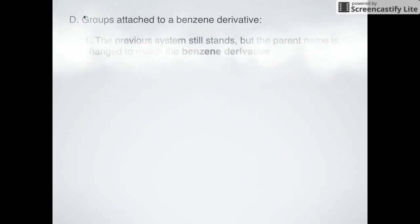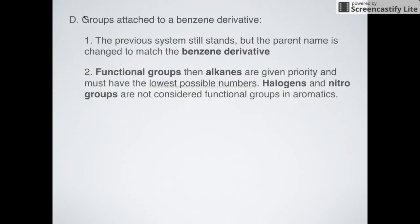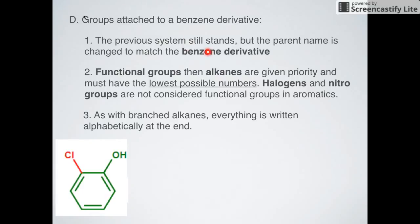Okay, so what groups can be attached to benzene derivatives? The previous system still stands. Nothing really changes, except that now we're using a benzene derivative. Functional groups have priority, and then alkanes. They must have the lowest possible numbers, and halogens and nitrate groups sadly are not considered functional groups in aromatics. As with branched alkanes, everything has to be written alphabetically. So here would be a structure. What is the benzene derivative of this? That would be this guy right here. There's an OH. It's all the stuff in green. That is a phenol group. Again, sadly, halogens are not considered actual functional groups. So what would this be? That's a phenol group. That would then be given priority, and that would be carbon 1. This would then have to be carbon 2. So it would be 2-chlorophenol, phenol being the now benzene derivative we're using to name this.